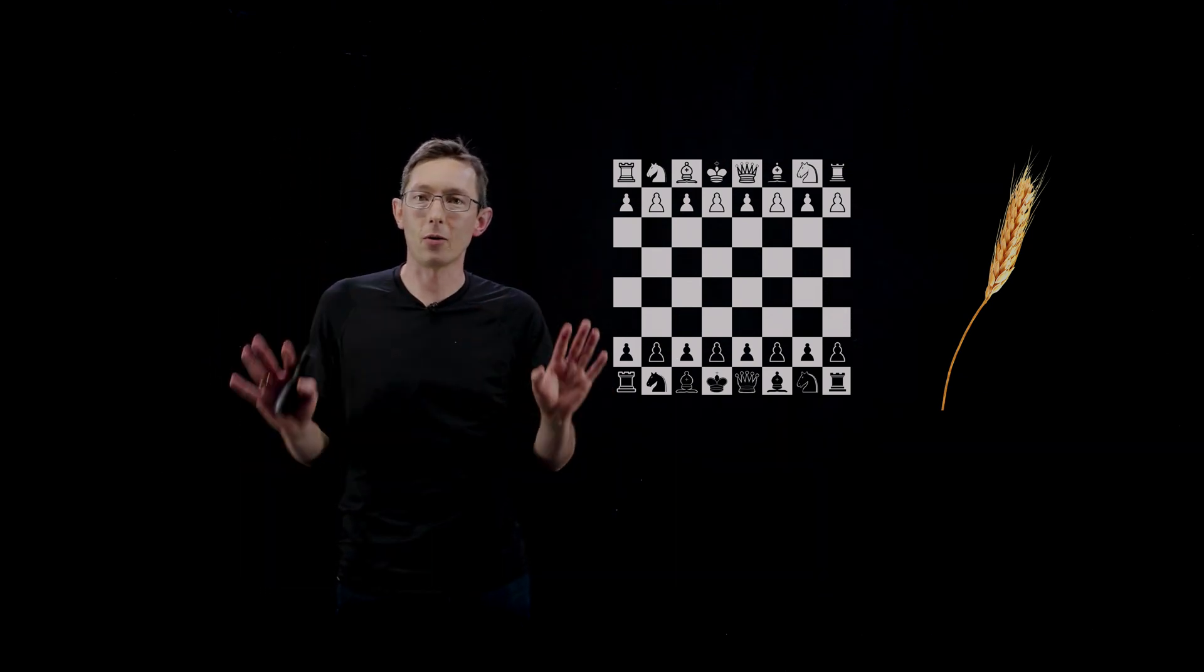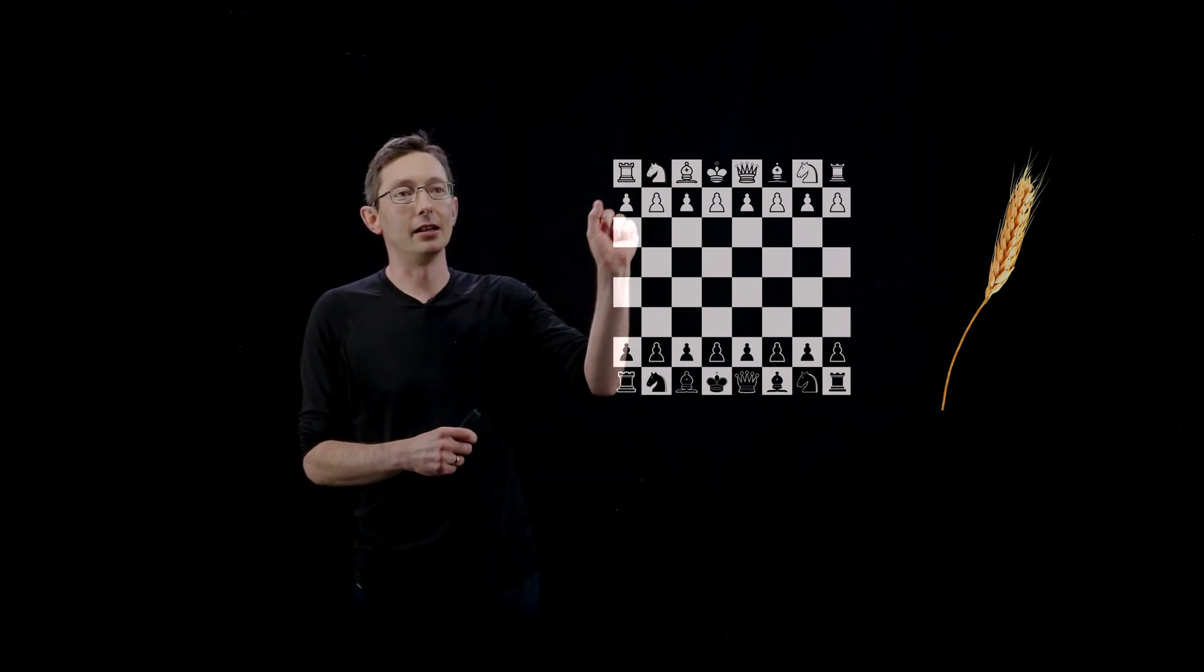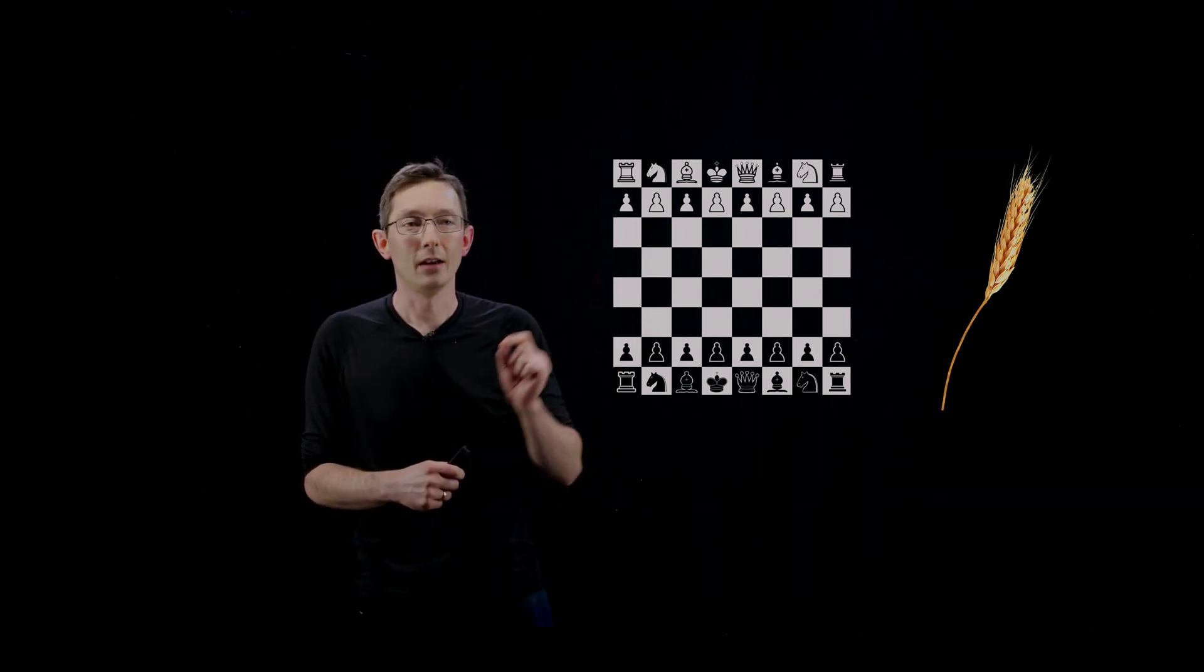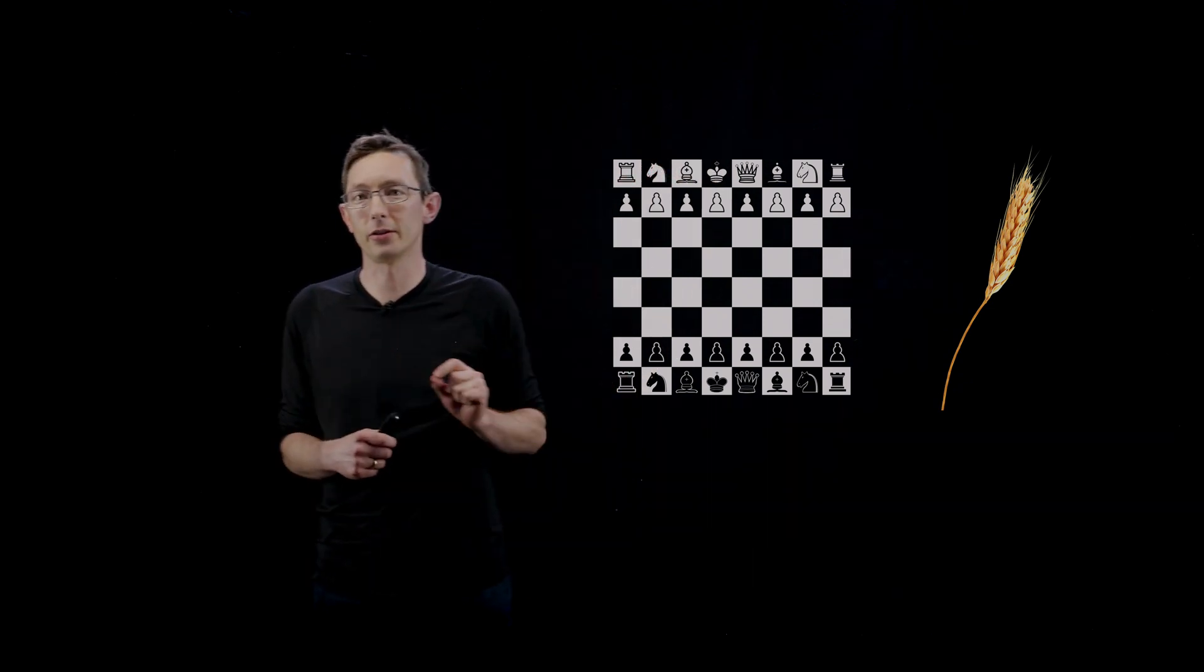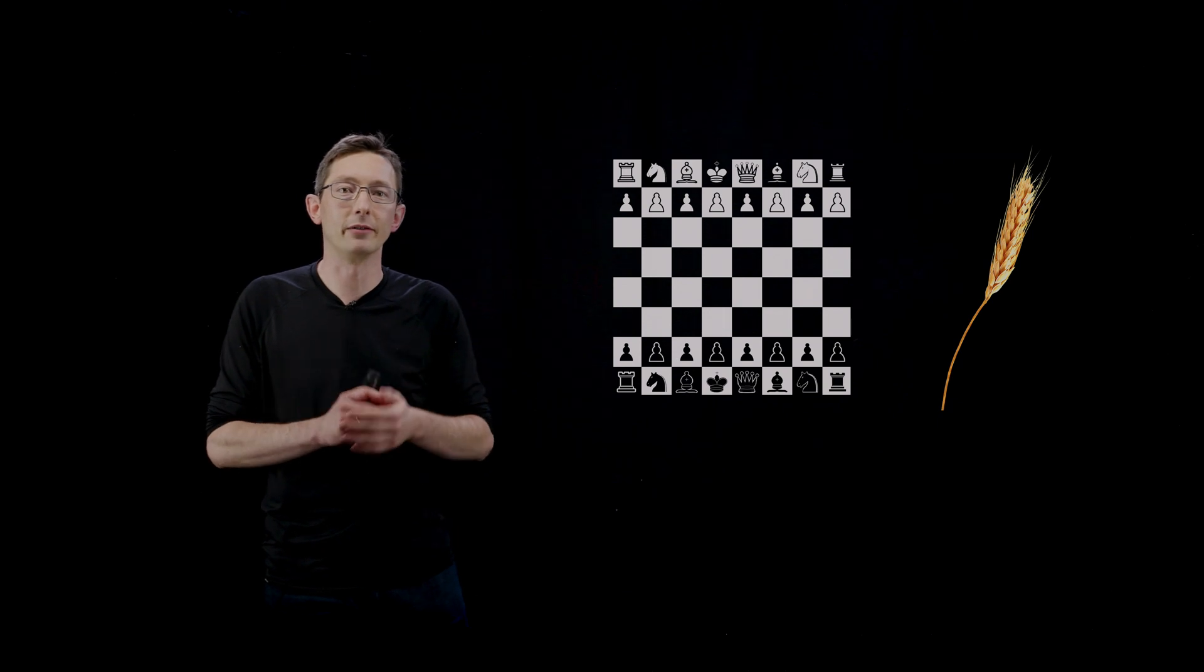here's my reward. All I require, all I ask is that you give me one grain of wheat for the first square. And you give me two grains of wheat for the second square. And four for the third square. And double the grains of wheat for every square.